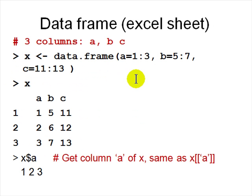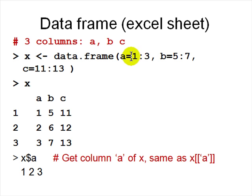The most important data structure in R is the data frame — it's like an Excel sheet with rows and columns. You create one with 'data.frame(a=c(1,2,3), b=c(5,6,7), c=c(11,12,13))' and assign it to x. Printing x shows the full data frame with three columns, a, b, and c.